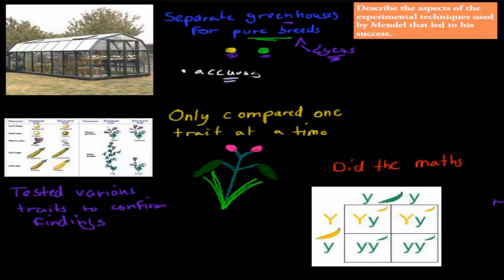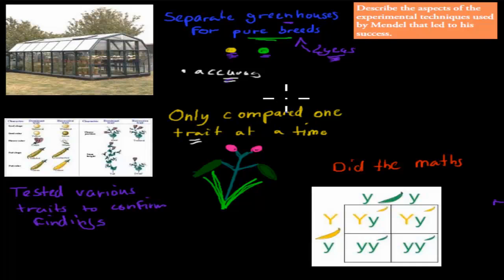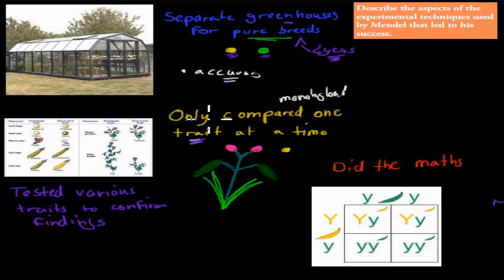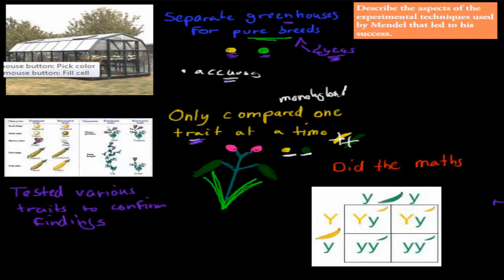He also made sure to compare only one trait at a time — similar to when we tested enzyme activity, where we tested pH, temperature, and concentration separately, keeping the other variables constant. In Mendel's monohybrid crossing, he only looked at one trait at a time. For example, he compared yellow versus green peas. He could have also compared pod color at the same time, but he didn't — he only did one at a time. This increased the validity of the experiment, because testing only one trait at a time is correct experimental design.